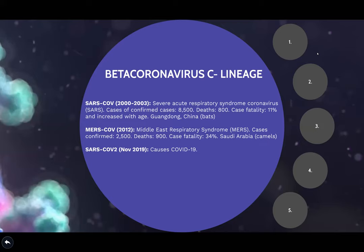MERS — Middle East Respiratory Syndrome — occurred in 2012, centered in Saudi Arabia, with a cycle from bats to camels to humans. Its case fatality was extremely high at 34%. SARS-CoV-2, which causes COVID-19 (named because it started in 2019), was initially reported in December, but accurate reports now show the first cases were diagnosed in November.